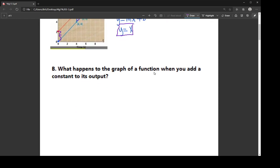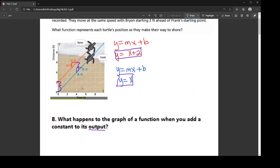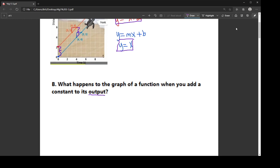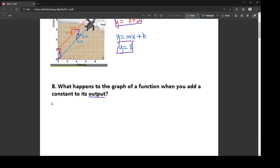So if you add a constant to its output, remember the output is the y value. So I'm saying, y equals all the stuff with x plus 2. So that plus 2 is outside of any grouping symbols. That's what they mean by adding it to the output. It translates the graph.